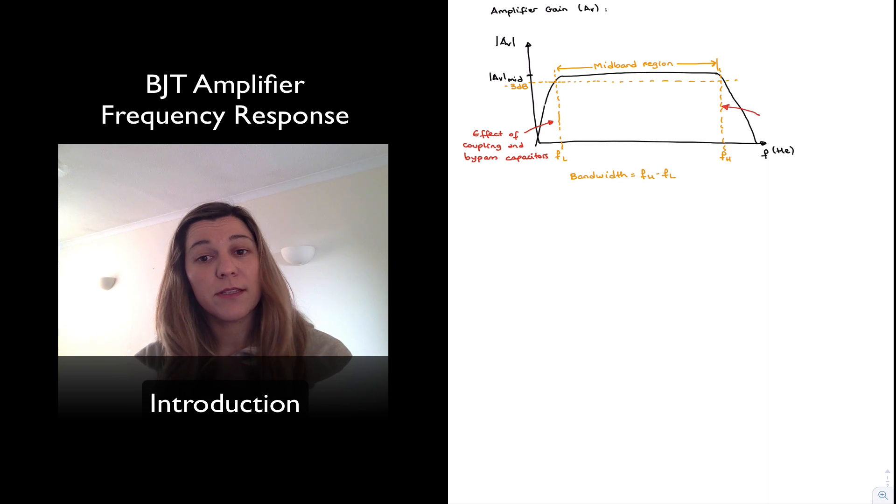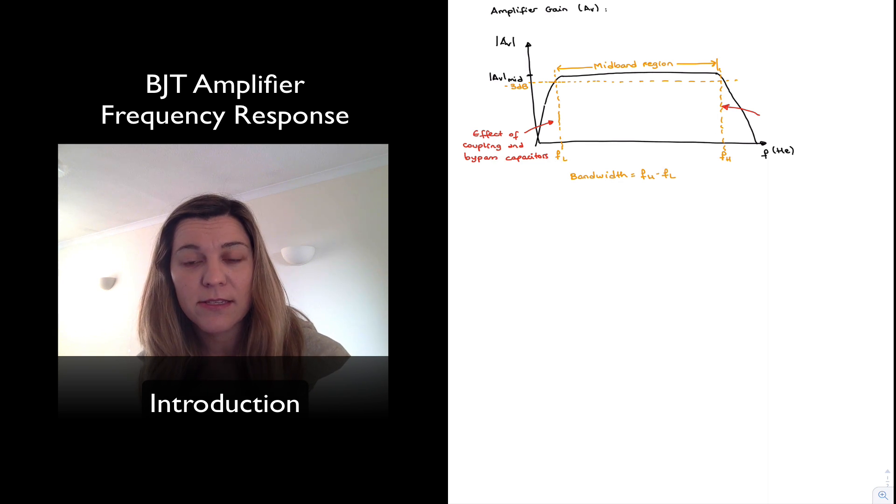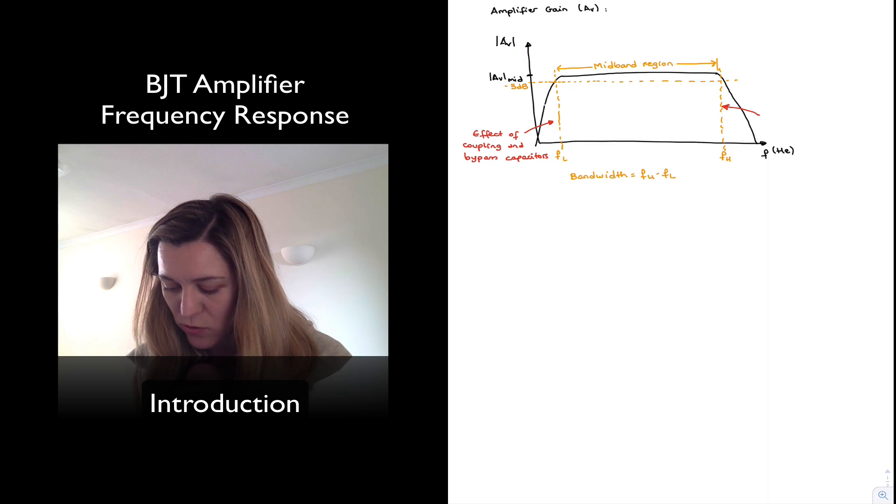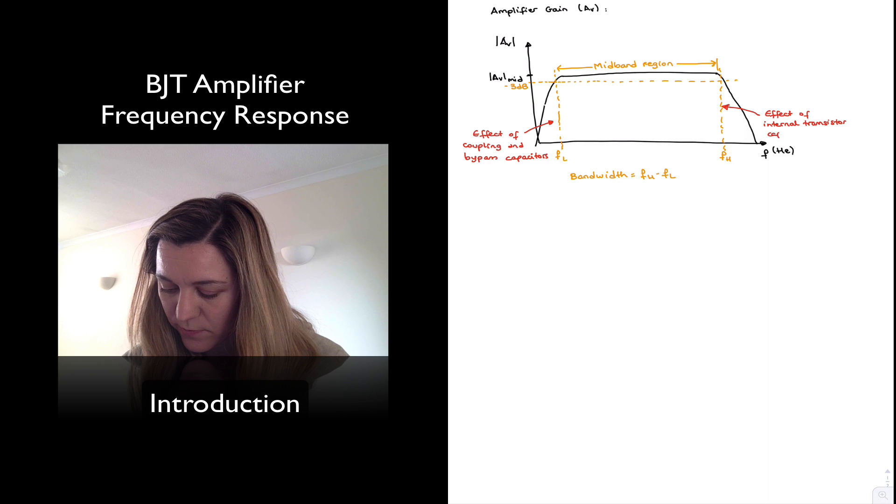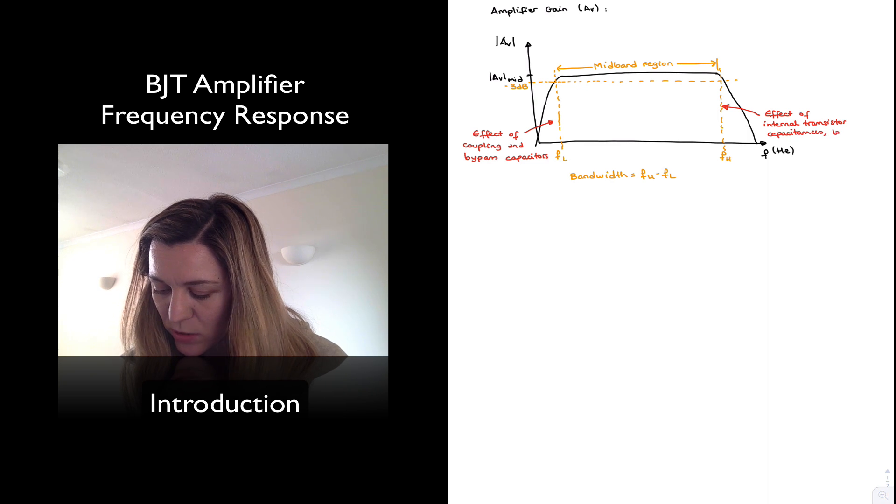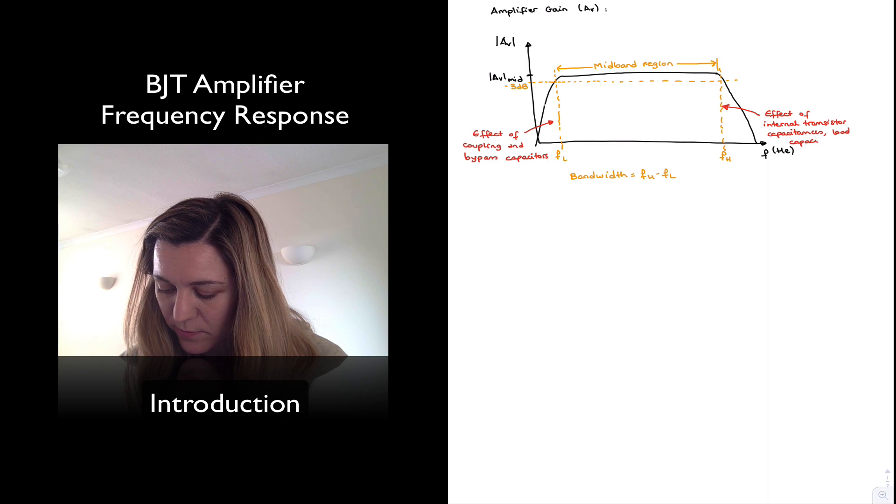And the drop in signal or in voltage gain at high frequencies is due to the effect of the internal capacitances of the BJT transistor, which we will study, as well as stray capacitances from the wires or the connections and load capacitances. If our amplifier is connected to another stage, it may have a load capacitance there. So this is the effect, generally speaking, of internal transistor capacitances, load capacitances, and stray capacitances.